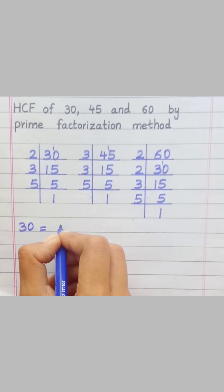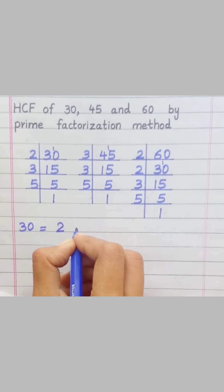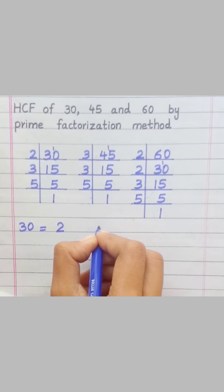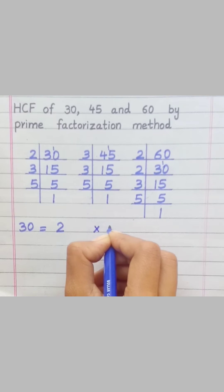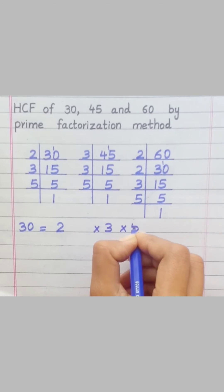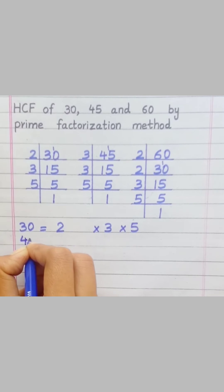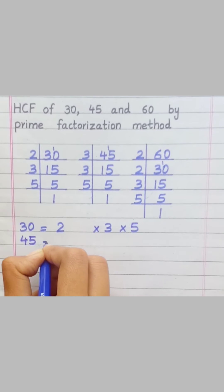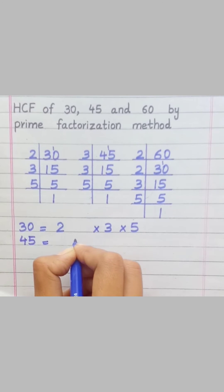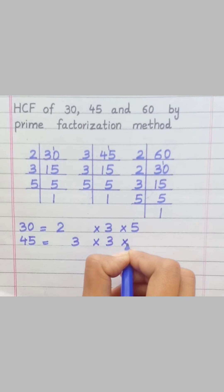30 equals 2 × 3 × 5. 45 equals 3 × 3 × 5.